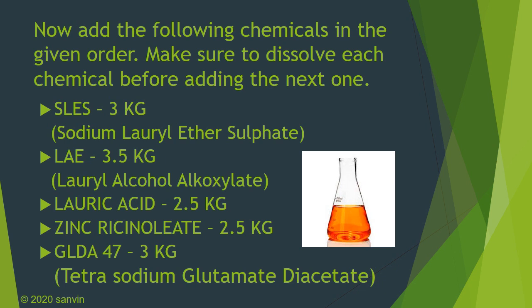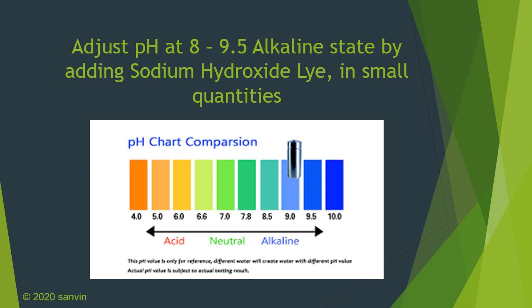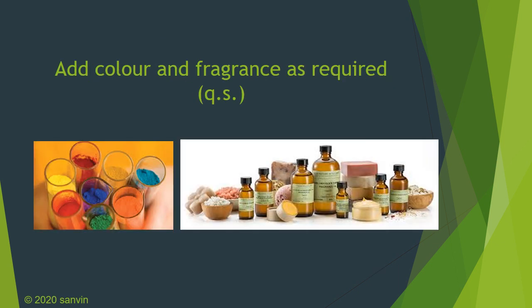Now that is done, what you have made is an acidic solution — you will have to make it alkaline. You adjust the pH by adding sodium hydroxide lye. Sodium hydroxide lye is sodium hydroxide, or caustic soda, mixed with water. You will have to add a 30% concentration of lye in small quantities. To make a 30% concentration, add 300 grams of sodium hydroxide to one liter of water and mix well. Add small quantities of this solution, keep checking the pH, and maintain it between 8 and 9.5 to have an alkaline solution ready.